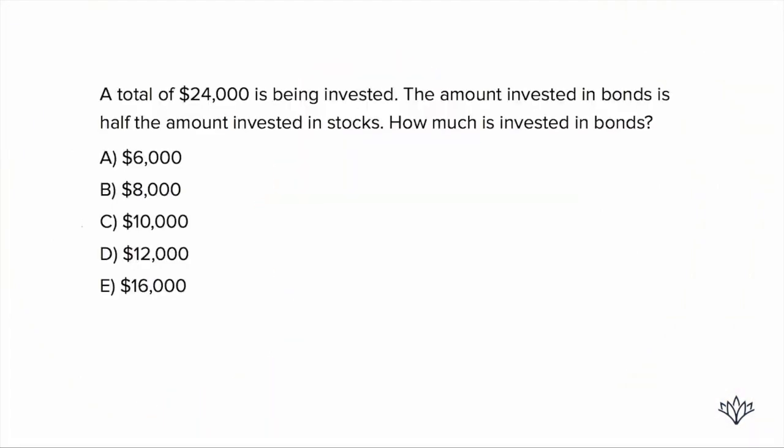So when we use the answer choices, what do we always start with? We start with answer choice C because the answers on the PSAT, SAT, and ACT are arranged from least to greatest or greatest to least. So here's what we're going to do. Let's start with choice C, $10,000.